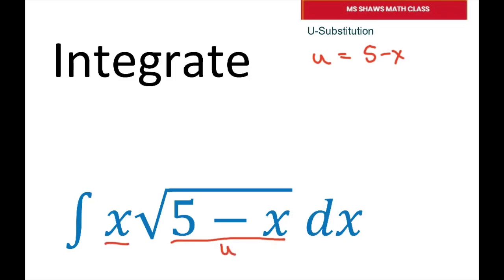Therefore my x would equal 5 minus u, and then if you differentiate u you're going to get negative 1 times dx. So that's just negative dx, but we need dx, so dx is going to be negative du.